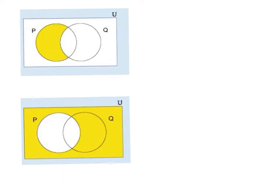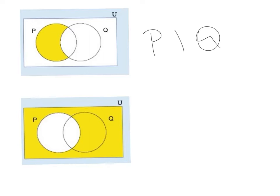In this case we have set P and set Q, and just a part of set P is shaded — everything in P but not in Q. So what's P but not Q? We have set P take away Q. This is set difference, and the symbol for set difference is P minus Q — everything in P but not in Q.